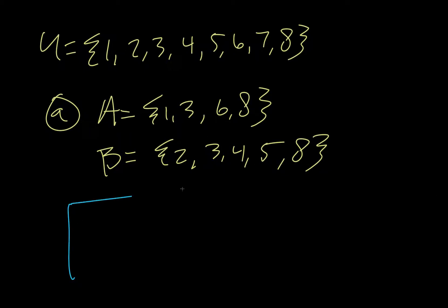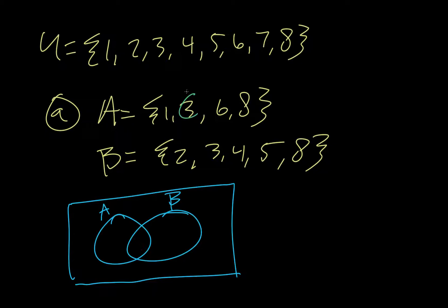So, we're gonna do a Venn diagram for this. We're gonna call this A, call this B. Now, the first thing we want to do is we want to know what they have in common. The things they have in common are three and eight. So, we're gonna write both of those in their intersection. So, three and eight go right there.